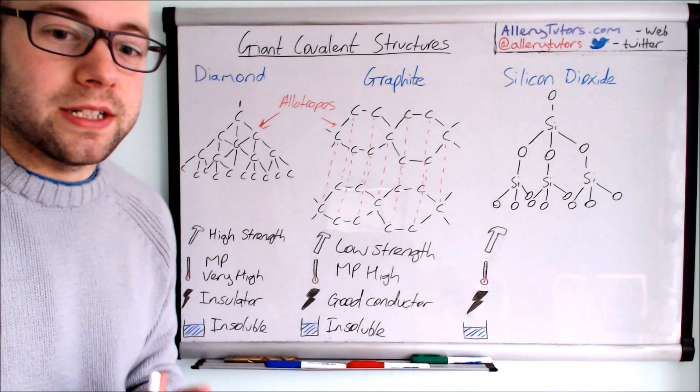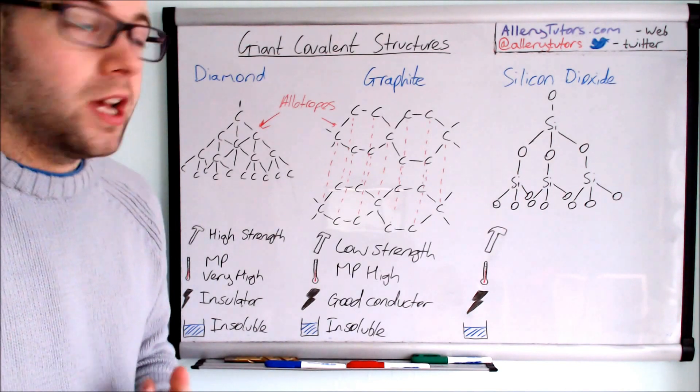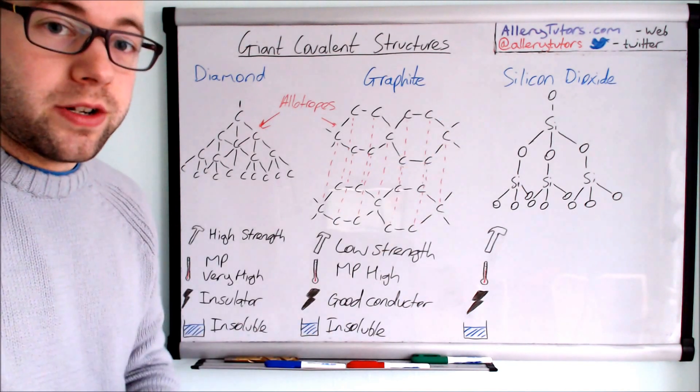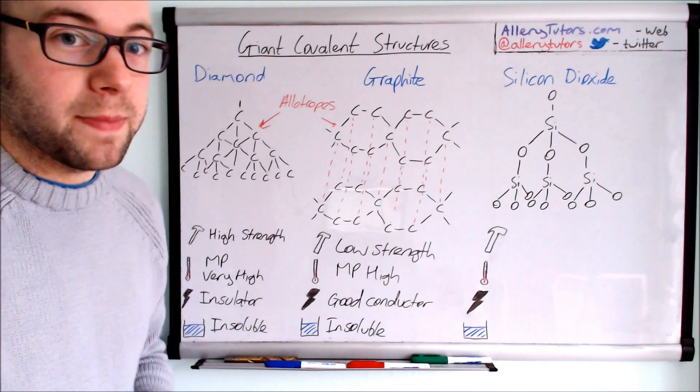Moving on to the last one: silicon dioxide. Silicon dioxide is also known as sand or quartz. It's made of silicon and oxygen atoms, similar structure to diamonds, therefore looks similar to a diamond, but obviously nowhere near as expensive.